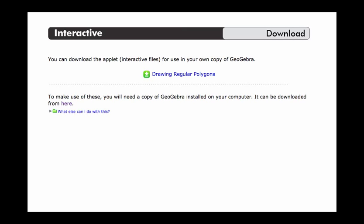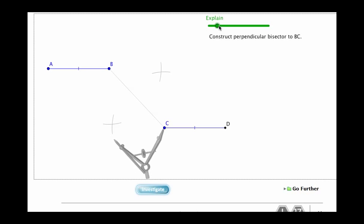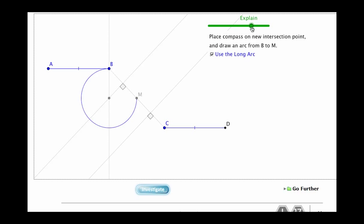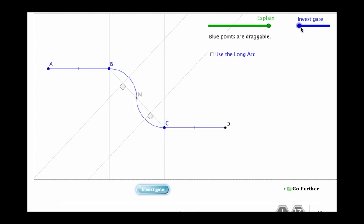A couple of the upcoming things that you can have a quick look at here is this geometrical construction interactive which guides students through the use of traditional tools such as a compass and a set square to construct a continuous curve between two parallel lines. And there are some investigations that are built around this one as well which can be accessed by clicking that investigate button at the bottom.